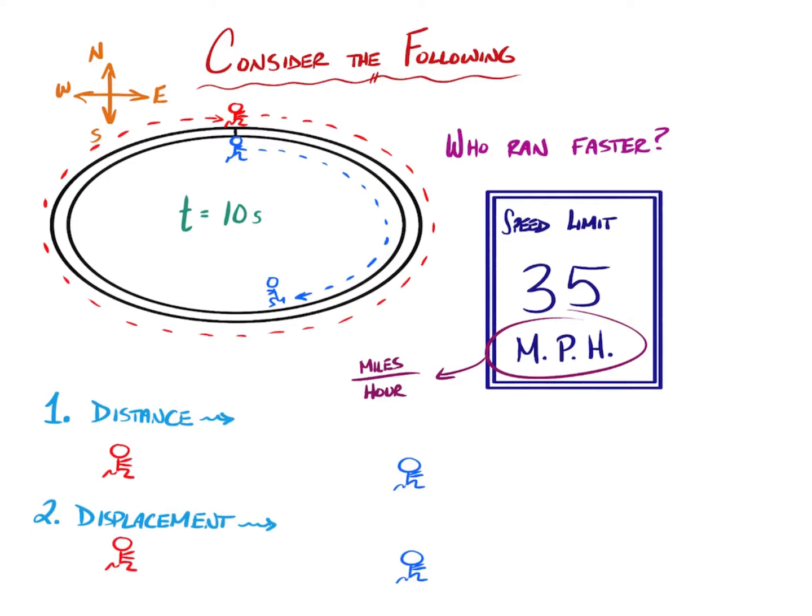So in this case, I'm going to make some assumptions here. Let's assume that the full track is 400 meters and we'll assume that the blue runner ran a total path of 200 meters. They ran about half that track just for argument's sake.